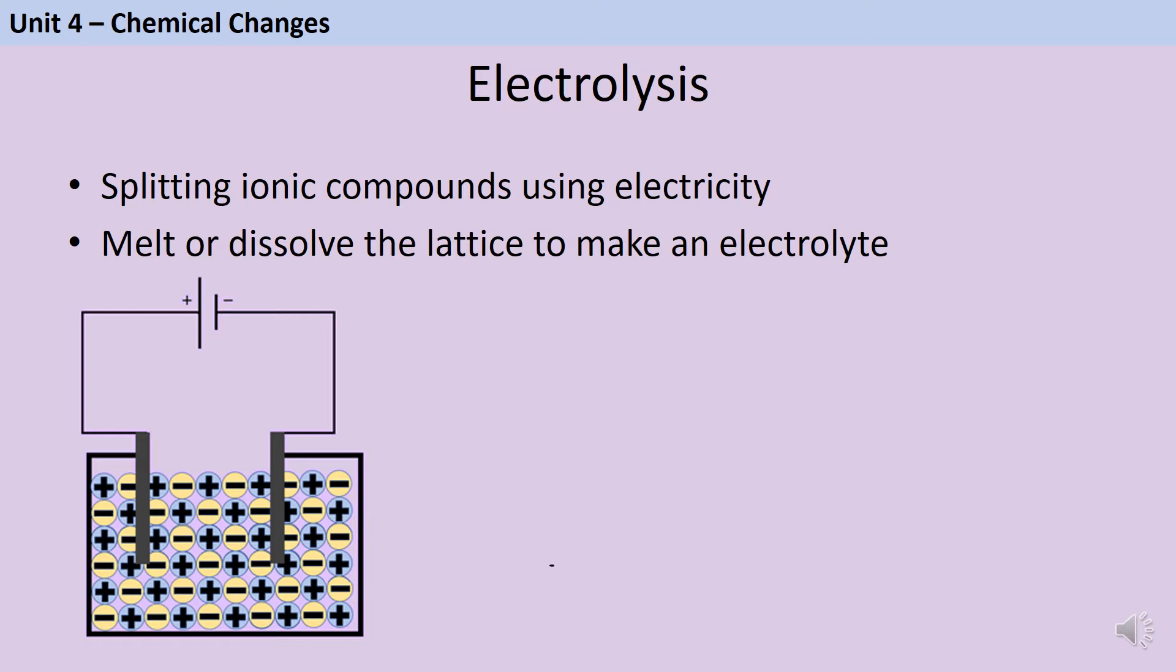We call the liquid formed an electrolyte, and it's made of positive ions, which we call cations, and negative ions, called anions. There will always be a cation and an anion from the ionic compound that we're electrolyzing, but if the electrolyte is a solution rather than a melt, then the electrolyte will also contain hydrogen and hydroxide ions from the water.